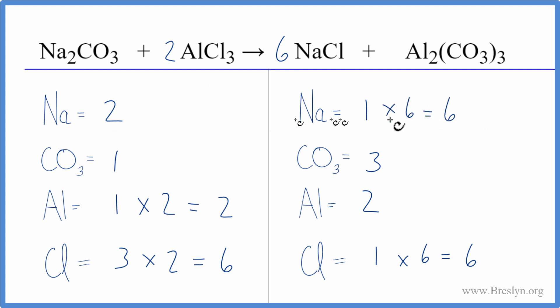Might as well balance the sodiums next if we put a three in front of the Na2CO3 sodium carbonate. Two times three. That gives us six. Those are balanced. We have one carbonate here times three. That gives us three carbonates and we're done. This equation is balanced.